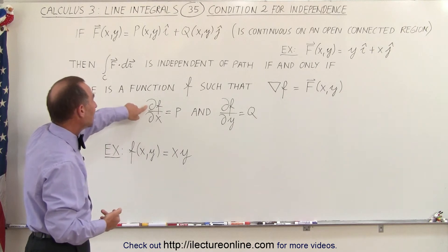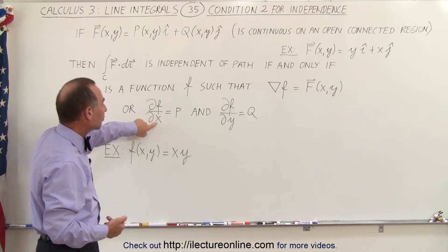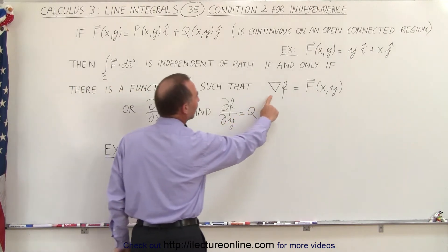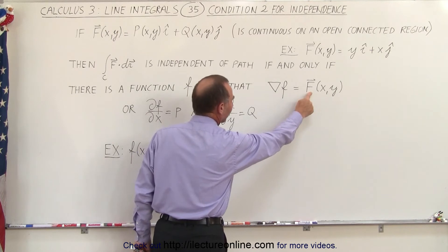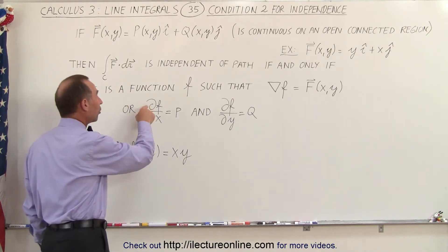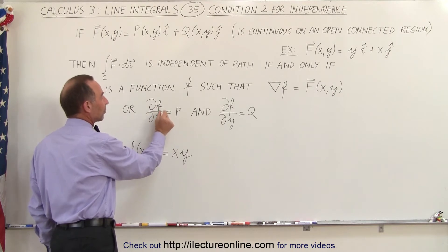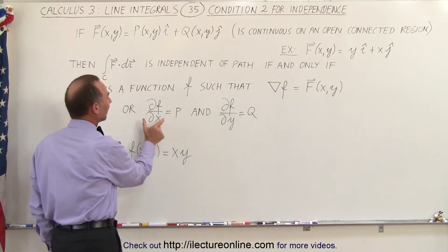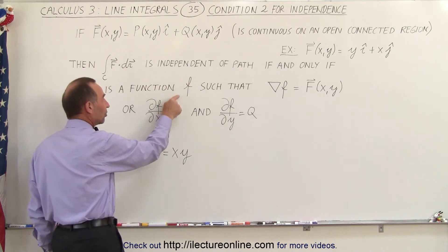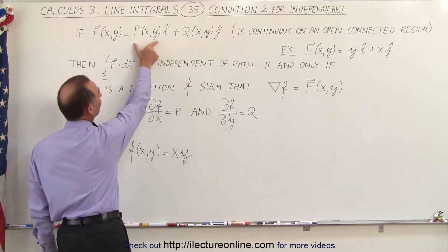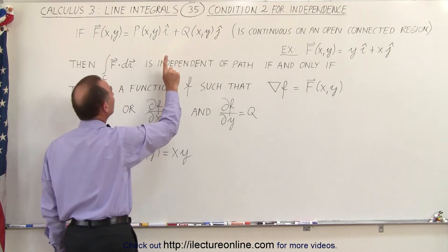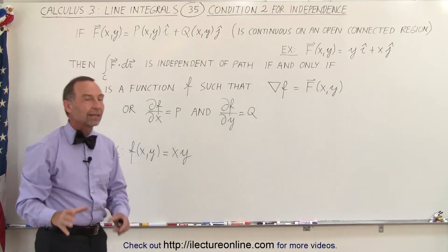The gradient is essentially taking the partial derivative of the function with respect to x and with respect to y, since we're dealing with two dimensions here. Taking the gradient of f gives you a vector, so if the partial of f with respect to x equals P and the partial of f with respect to y equals Q, then we know this vector field allows a path-independent line integral.